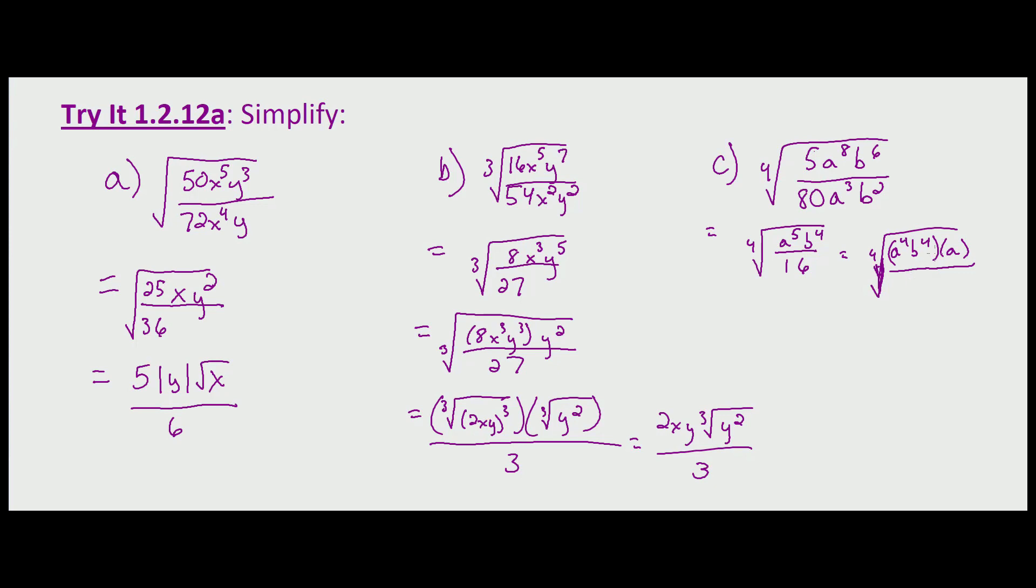That equals: when we take the fourth root of a to the fourth, we have to worry about the absolute value. Same thing with b to the fourth, because we're left with ab, which each one of those is to the first power. So we're looking at the absolute value of ab times the fourth root of a, and then the fourth root of 2 to the fourth, or the fourth root of 16, is simply 2.